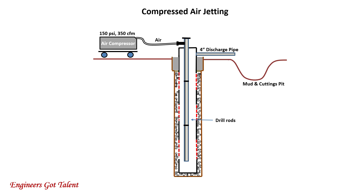Compressed air jetting is another method of well development, done by injecting high-pressure and high-volume air to remove bentonite at the well bottom. High-pressure air is provided by the air compressor. Compressed air from the compressor passes inside the drill string at high pressure and volume, carrying the bentonite and drilled cuttings out of the well and into the mud pit. If there is a water source or aquifer, the compressor discharge pressure will increase during jetting. In this case, the air compressor is alternately turned on and off to give time for the water to accumulate inside the well.